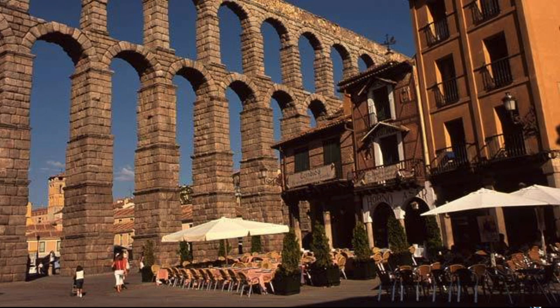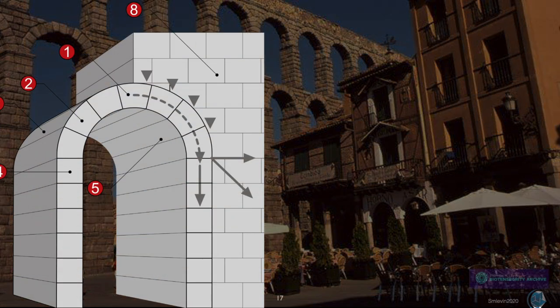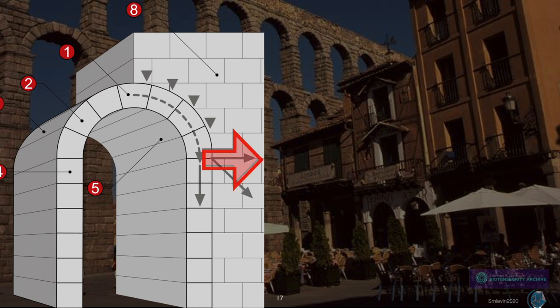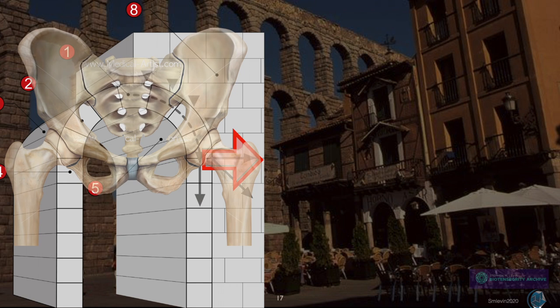The Roman arch, this one in Segovia, Spain, they share a similar story. It allows for spanning a greater distance between posts, but it also pushes out the pillars and walls. If you use the arch for a model of the pelvis, as is frequently done, you end up with forces pushing the femur out, not just down.